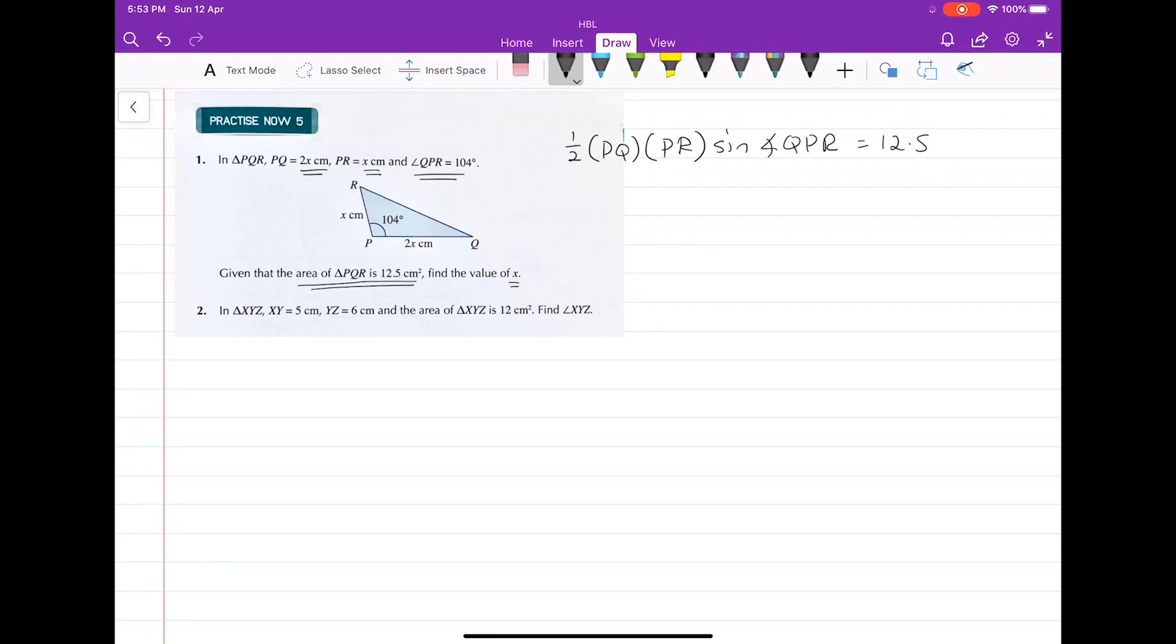Now let's substitute in all these values. Half times 2x times x times sine 104 degrees is given as 12.5.